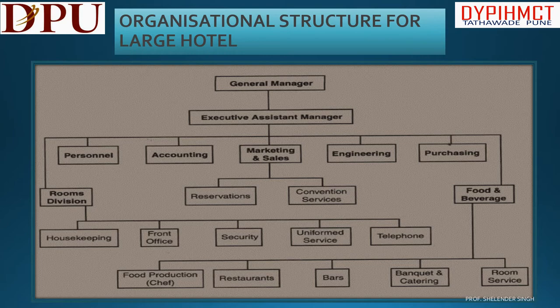Other departments include Accounts, Sales and Marketing, Engineering, and Purchasing. There are also sub-departments in the hotel which come under various operational heads. For example, Food Production, Restaurants, Bars, Banquet and Catering, and Room Service all come under the Food and Beverage Service department.